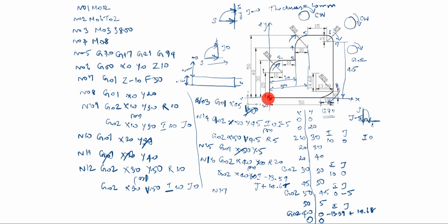N18: M05, spindle off. N19: M09, coolant off. N20: M30, end of the program.